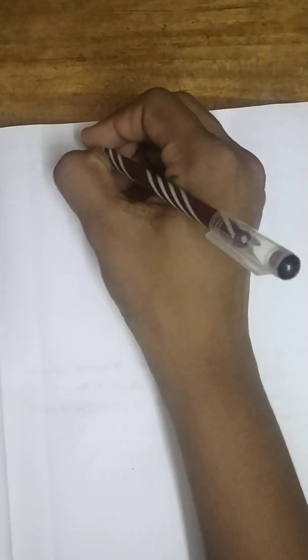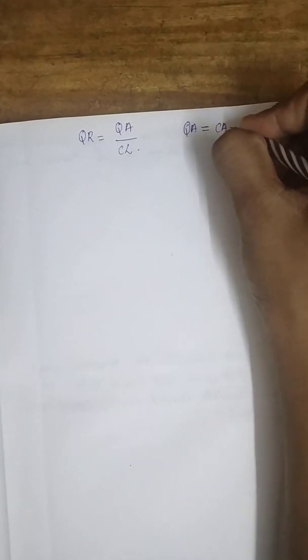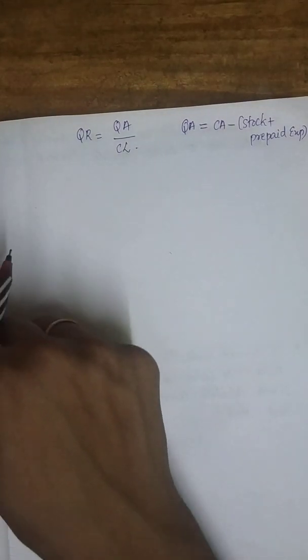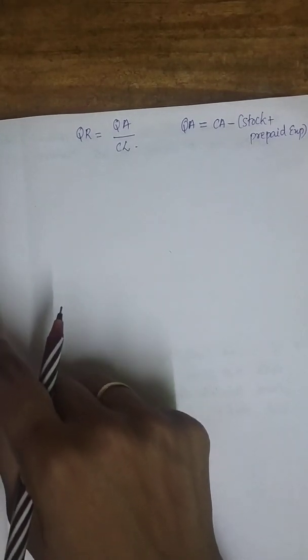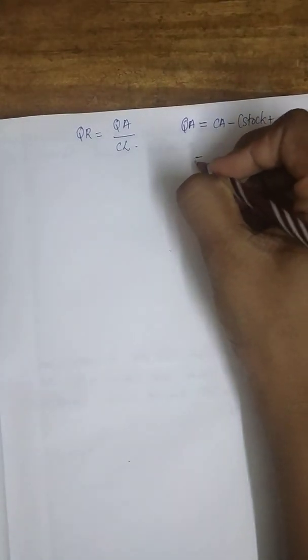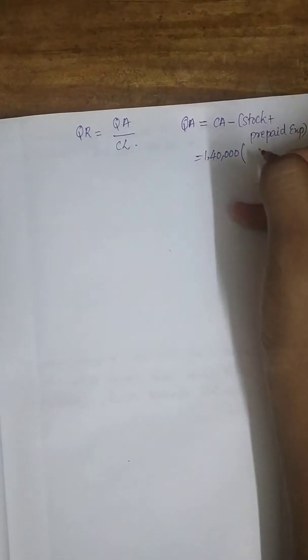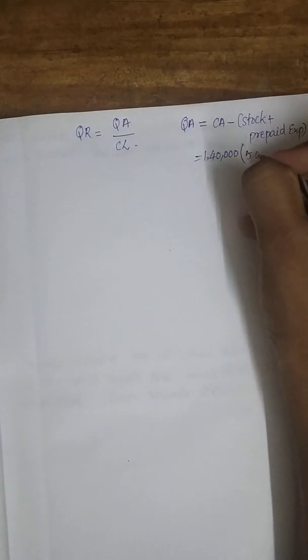Next, the quick ratio equals quick assets or liquid assets divided by current liabilities. Quick assets are calculated by taking current assets and subtracting stock and prepaid expenses, as these are not liquid. Debtors are $20,000 (bills receivable $15,000), cash at bank $30,000, cash in hand $20,000. Stock and prepaid expenses total $55,000.